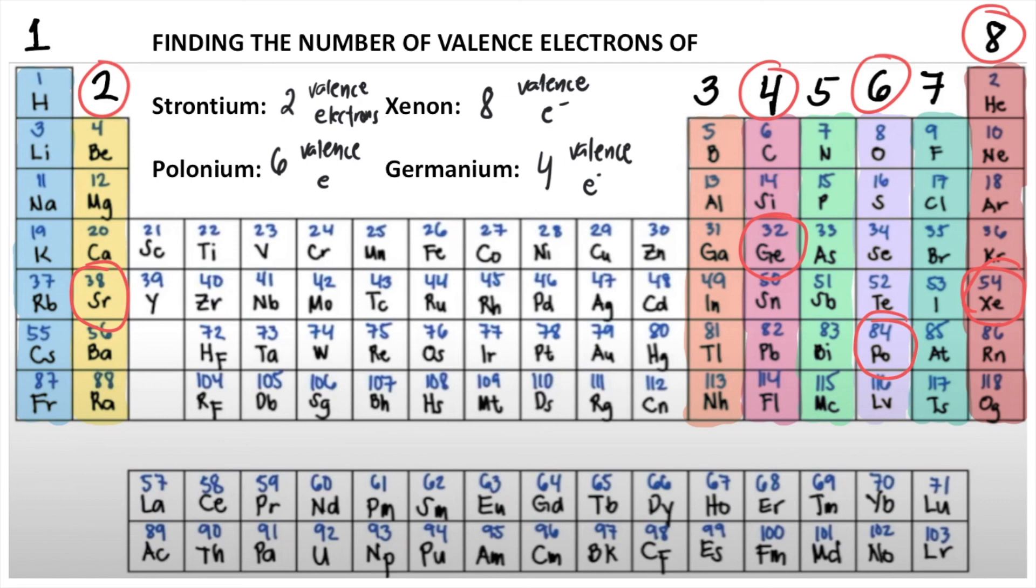So yeah, that's the shortcut in finding the number of valence electrons just by using the periodic table of elements.